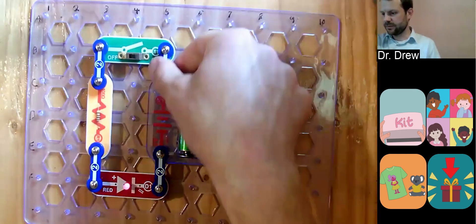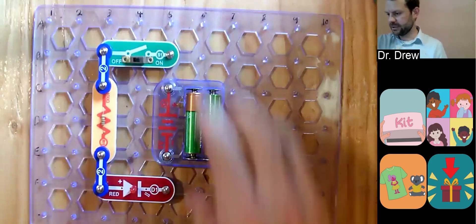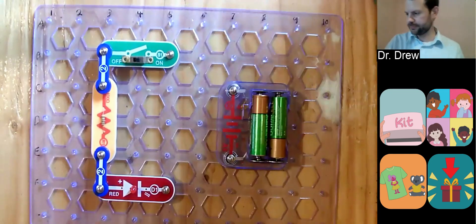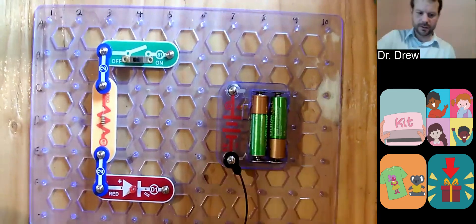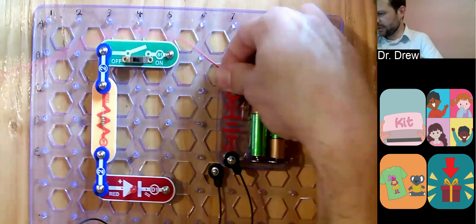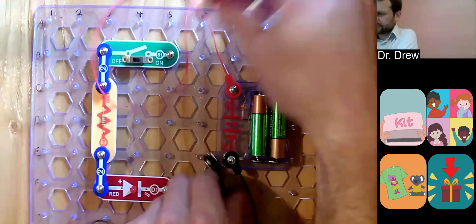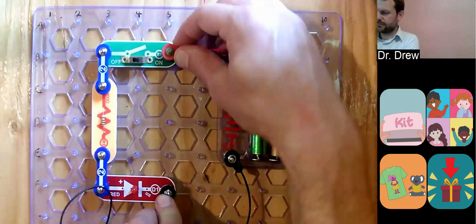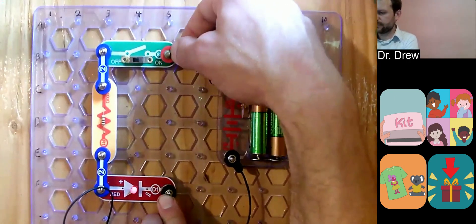Because you see if we take off our leads, move it over here, just for fun. Put a black jumper cable on the negative. Put a red jumper cable on the positive. And if we touch them, oh, it's on.